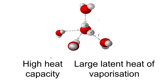We say it has a high heat capacity and a large latent heat of vaporization. A high heat capacity means that it can store a lot of energy and it takes a lot of energy to change state. This is important because it prevents temperature changes within organisms.